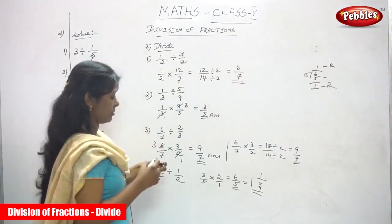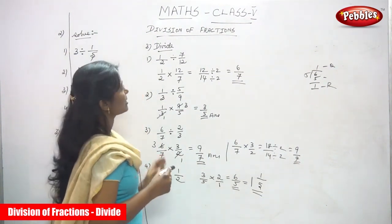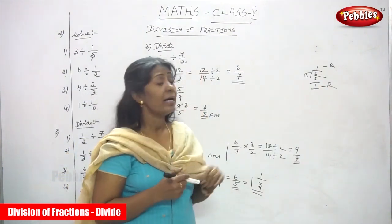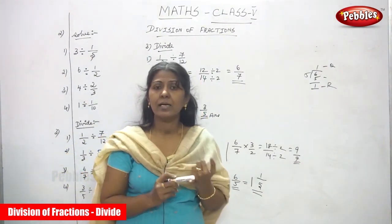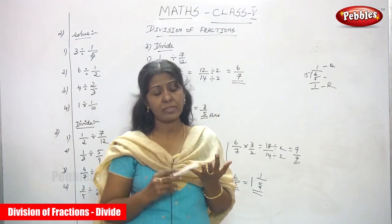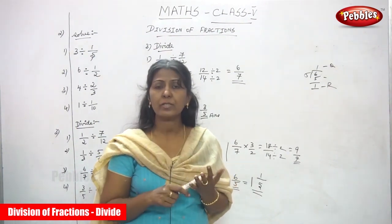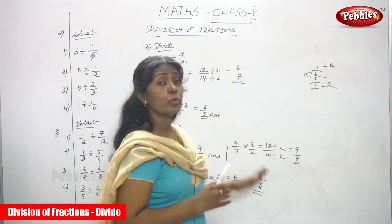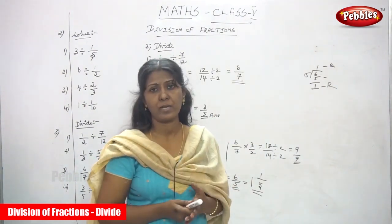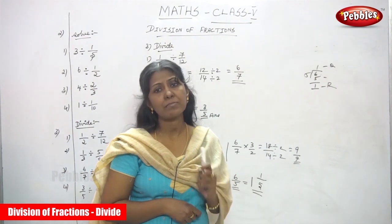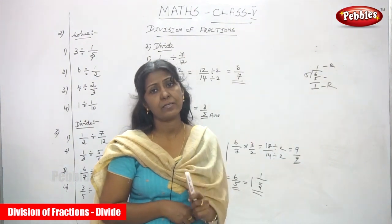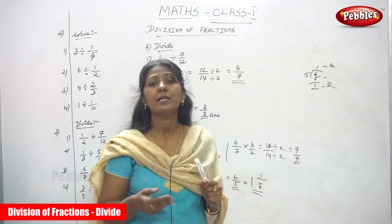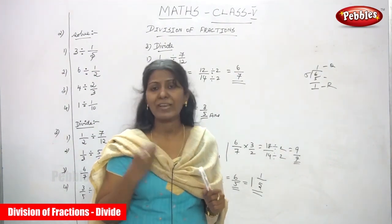We have solved four sums for division of fractions: first, whole number divided by fraction; then fraction divided by whole number; and now fraction divided by fraction, reducing to the lowest term where possible. Please go through the sums again and again, watch the videos repeatedly so you can understand the concept very thoroughly.